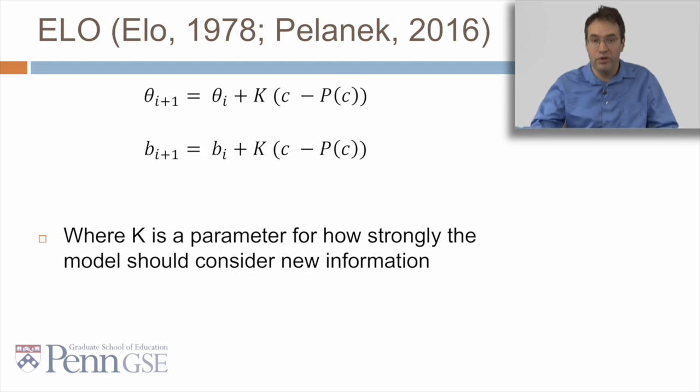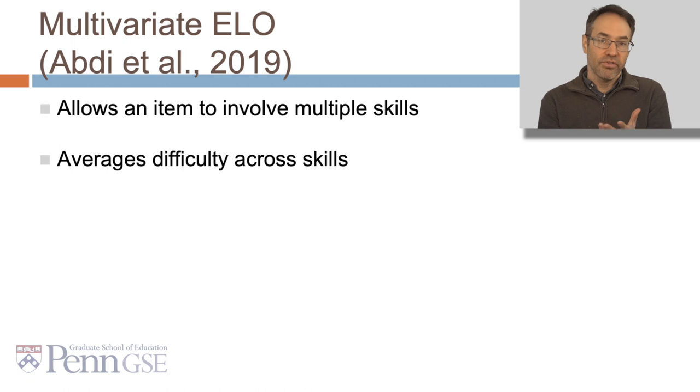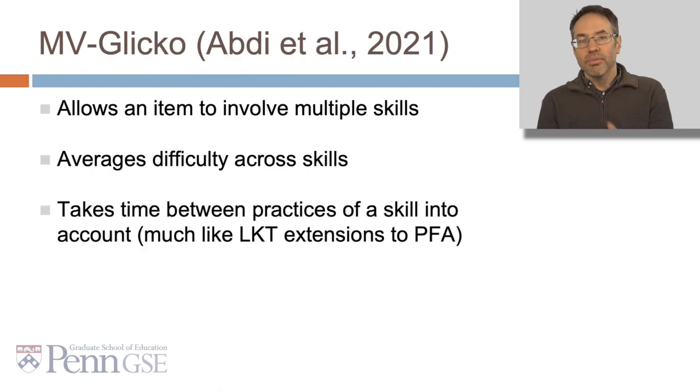ELO does this based on two very simple formulas, where it changes the student parameter and it changes the item parameter every time it encounters a new experience, taking the difference between the student's actual response and the predicted response and weighting that by some factor K, a parameter for how strongly the model should consider new information when updating the new estimates of ability and item difficulty. Now an important extension to ELO is multivariate ELO, which allows an item to involve multiple skills and averages difficulty across skills, and takes time between practices of a skill into account, much like LKT extensions to PFA can do.